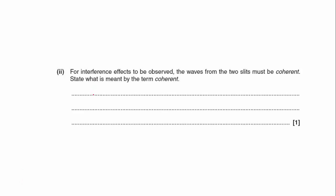Part 2. For interference effects to be observed, the waves from the two slits must be coherent. State what is meant by the term coherent. That means there is a constant phase difference.